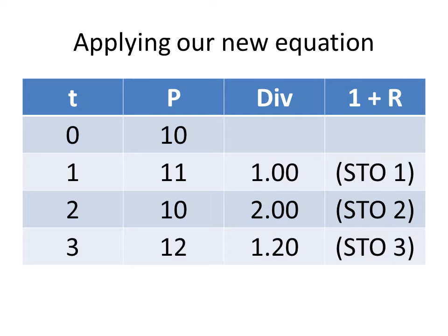So here we have some information. We have the different times, times 0, 1, 2, and 3. We have the prices at those different times. We have the dividends at those different times, except for time 0. And then we have a column for our 1 + R.